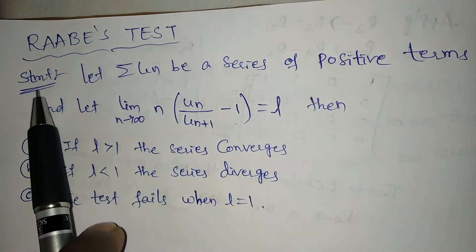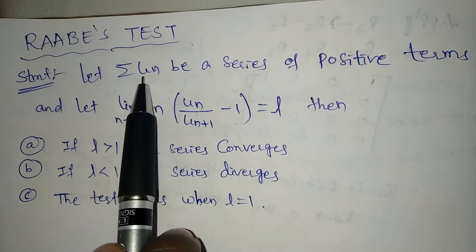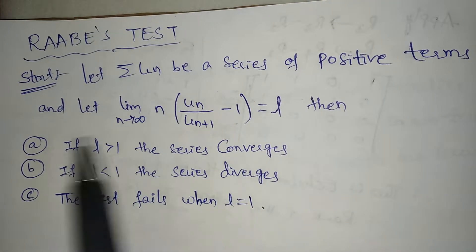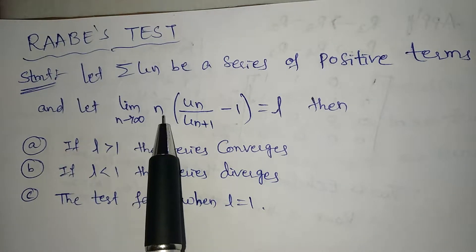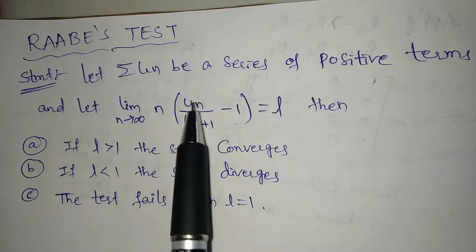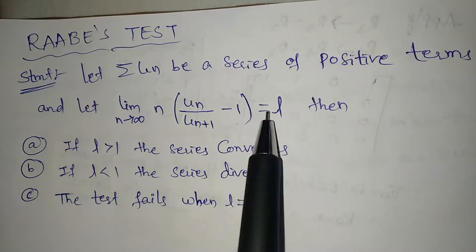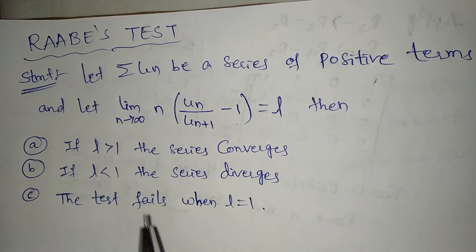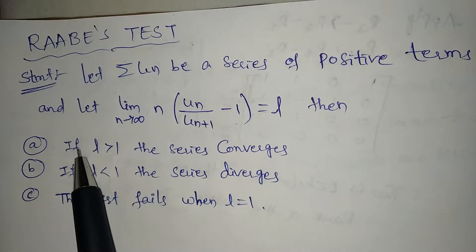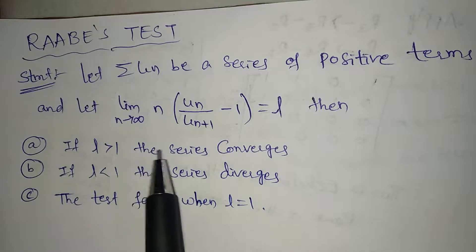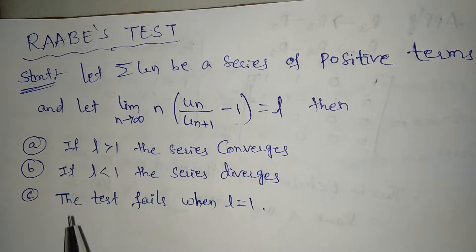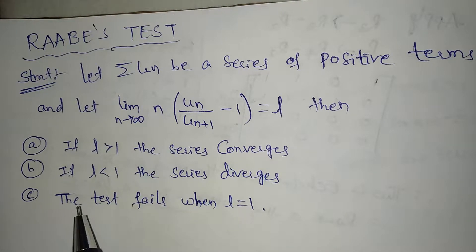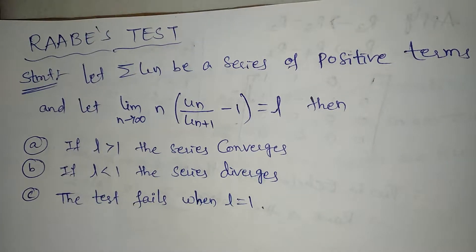Raabe's Test statement: Let summation Un be a series of positive terms and let limit n tends to infinity of n times (Un/Un+1 minus 1) equal to L. Then, if L greater than 1, the series is convergent; if L less than 1, the series is divergent. The test fails when L equal to 1.